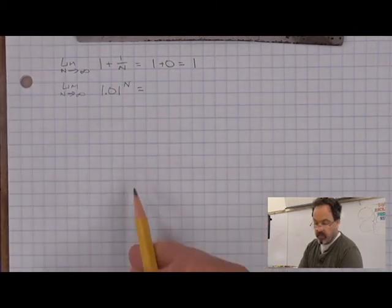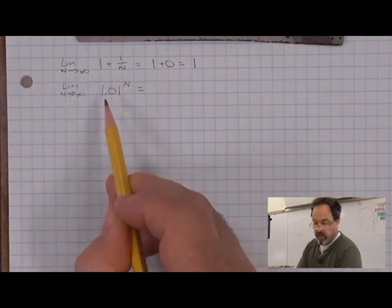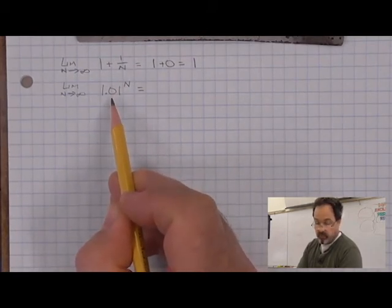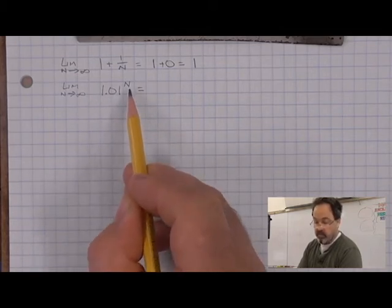And if we raise that to the nth power, we know that this is an exponential function that has a base that grows because it's greater than 1, even though it's just a little bit over 1. As n goes to infinity, this limit will be infinity.